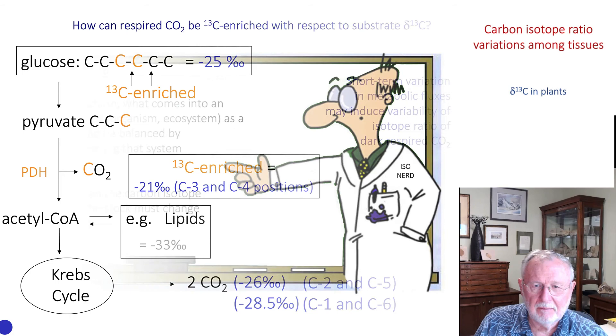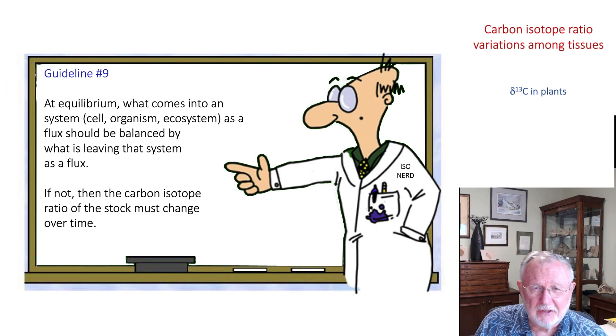So at equilibrium, what comes into a system, whether it's a cell or an organism or an ecosystem, as a flux should be balanced by what's leaving at equilibrium. If not, then we'd expect the carbon isotope ratio of the stock to change over time. And we tend not to see that. So, time scale patterns might give you the impression that the system is not at equilibrium.